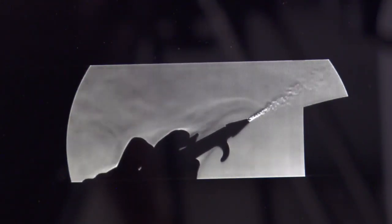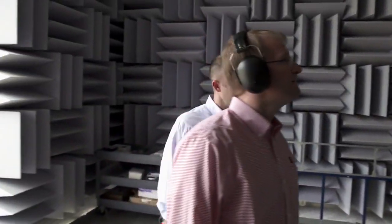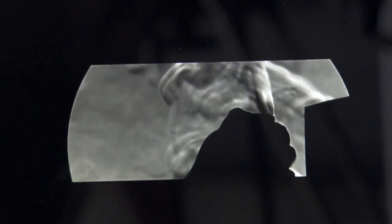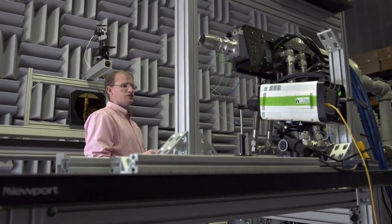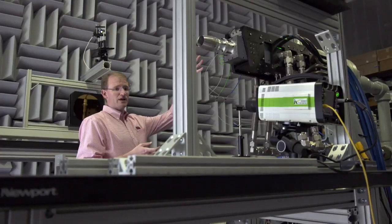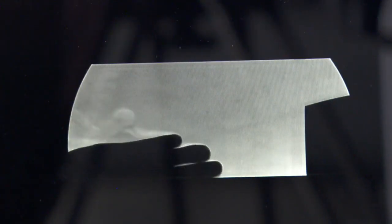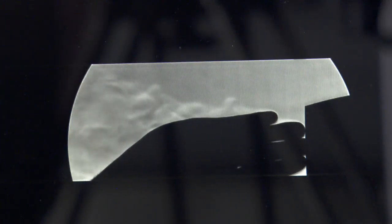They'll use Schlieren imaging to compare their modified nozzle with a standard baseline one. Schlieren is a German word that just means streak. So you see a streak in the image, a dark region or a light region. This is our Schlieren system. It's set up to let us image the sound waves and the shock waves in the jet. Most people have seen this when they see heat waves rising off pavement on a hot day.